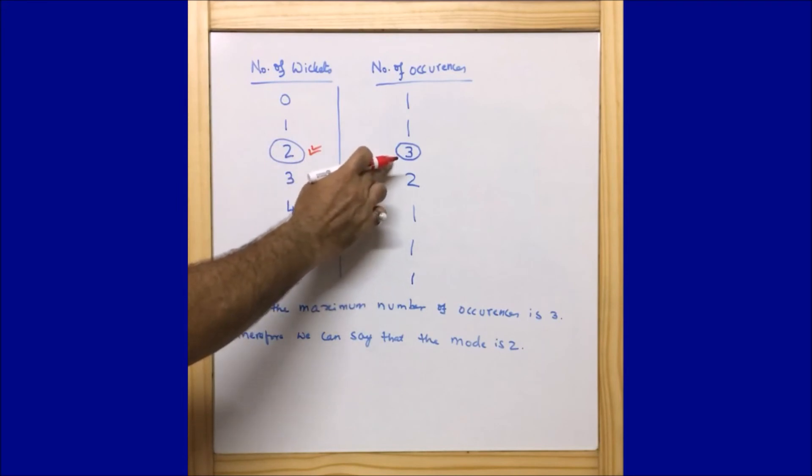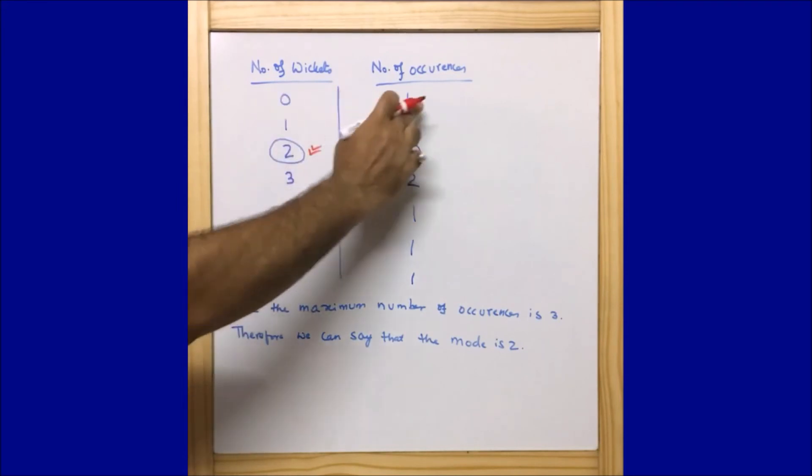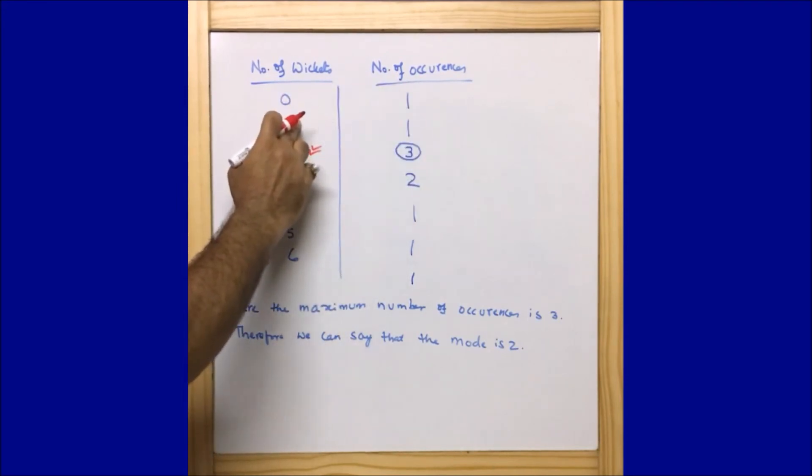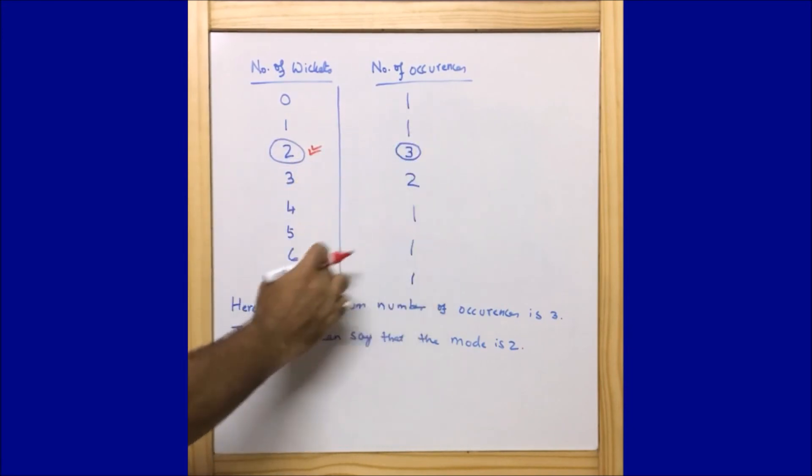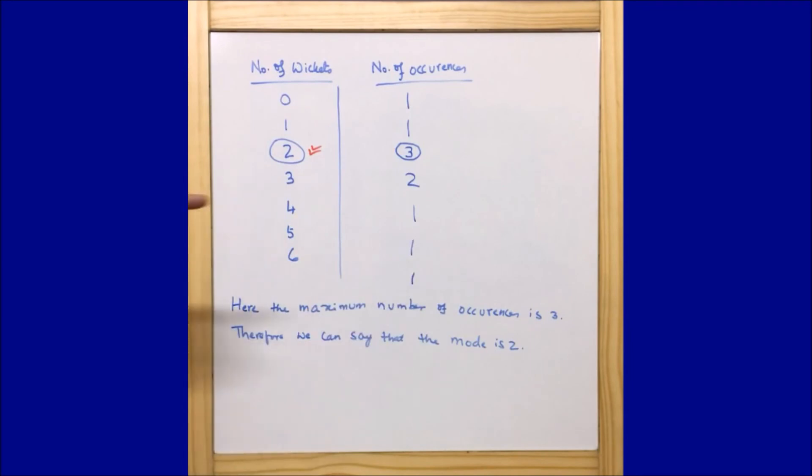Zero came once, one came once, two came three times, three came two times, four came once, five came once, six came once. So the number of occurrences or the number of matches is three and the wickets taken is two, therefore the mode is two.